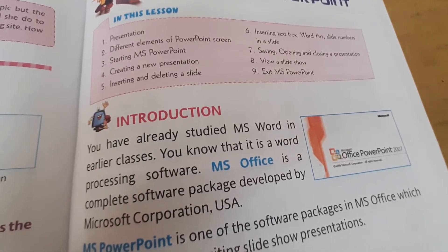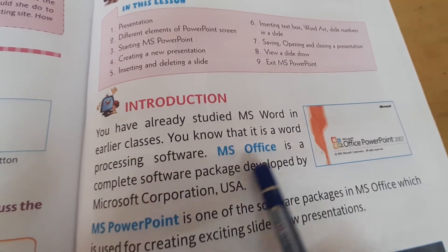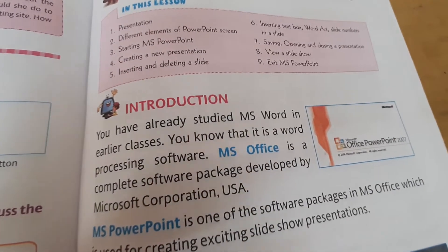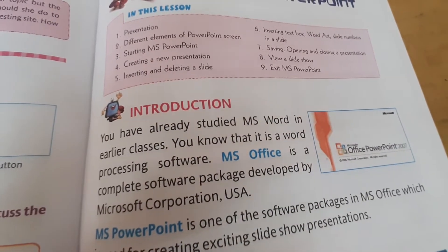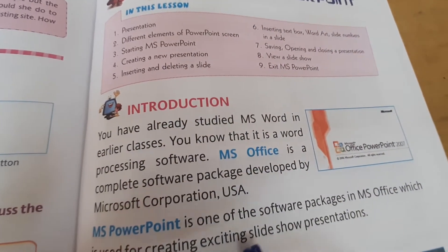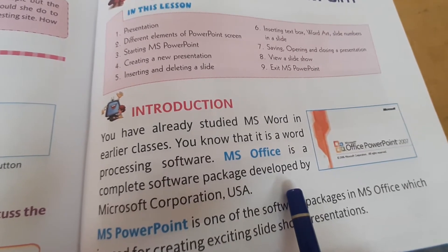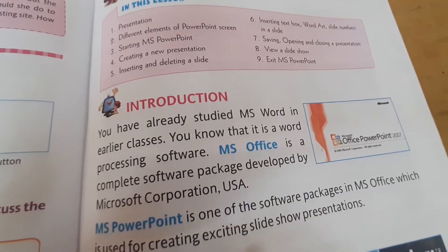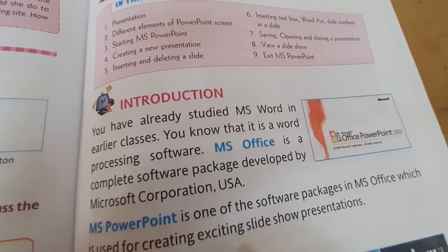While explaining the previous chapter about word processors, I told you that MS Office was basically developed for office work — whatever is needed while working in an office. Everything is there in that package: MS Word, which is a word processing software; MS PowerPoint, which is a presentation software; MS Excel; MS Access — and many other applications which people usually need when working in an office.